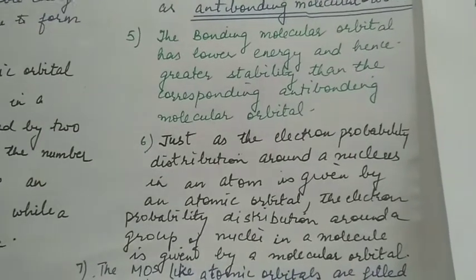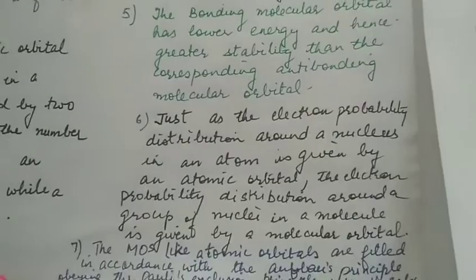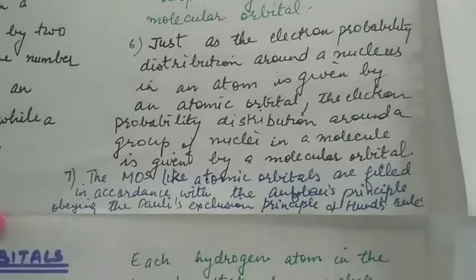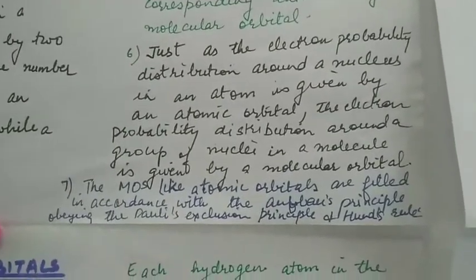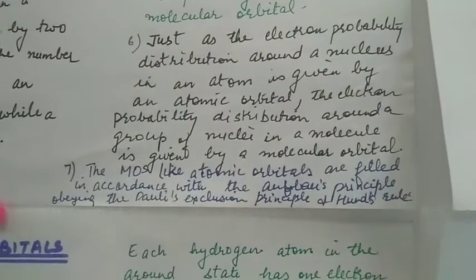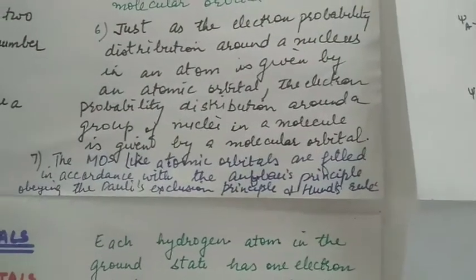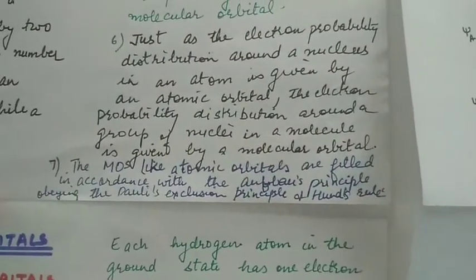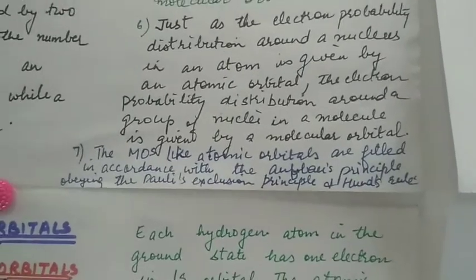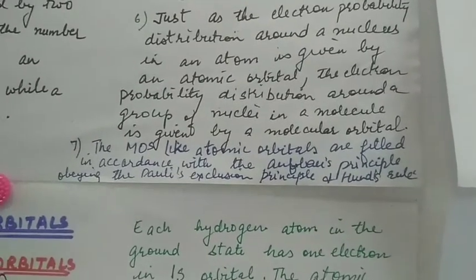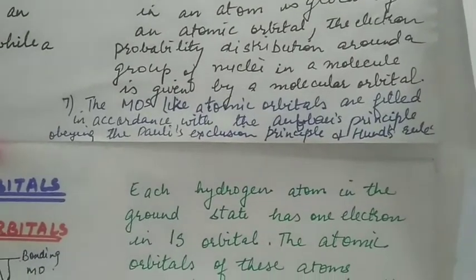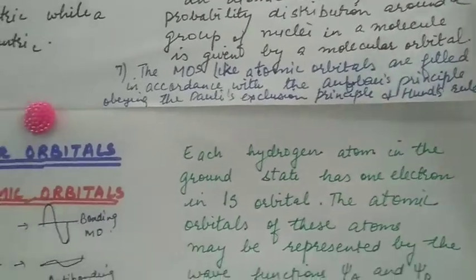Just as the electron probability distribution around the nucleus in an atom is given by an atomic orbital, the electron probability distribution around a group of nuclei in a molecule is given by a molecular orbital. The molecular orbitals, like atomic orbitals, are filled in accordance with the Aufbau principle, obeying Pauli's exclusion principle and Hund's rule.